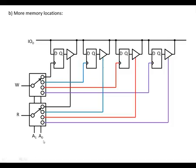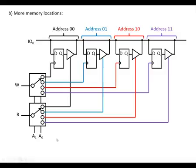So two address lines, that gives us four combinations. We've got address 00, 01, 10, and 11. So that's how you can do addressing.